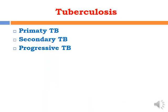Regarding the types of tuberculosis, we have primary tuberculosis, secondary tuberculosis, progressive tuberculosis, and miliary tuberculosis.